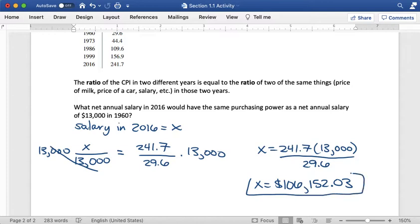So what this is telling us is that a person who made a salary in 1960 of $13,000 a year would be able to buy the same amount of stuff as a person in 2016 who made a salary of $106,000 per year.